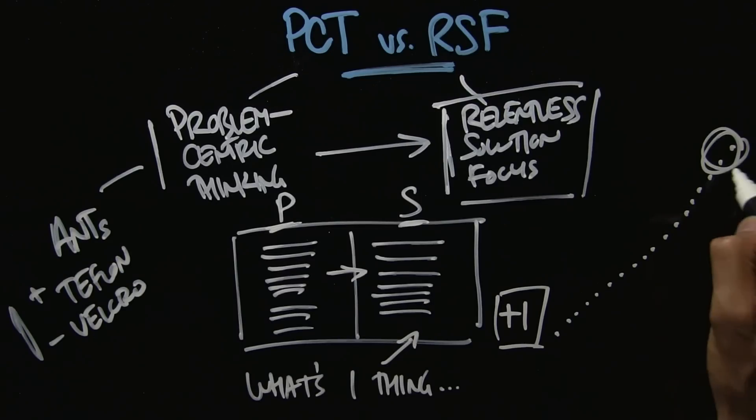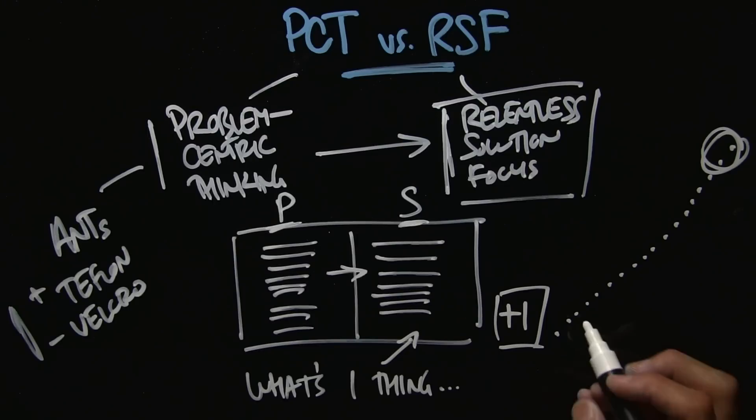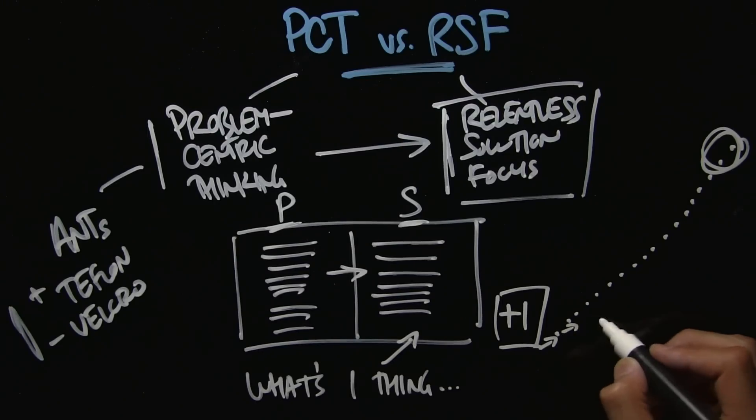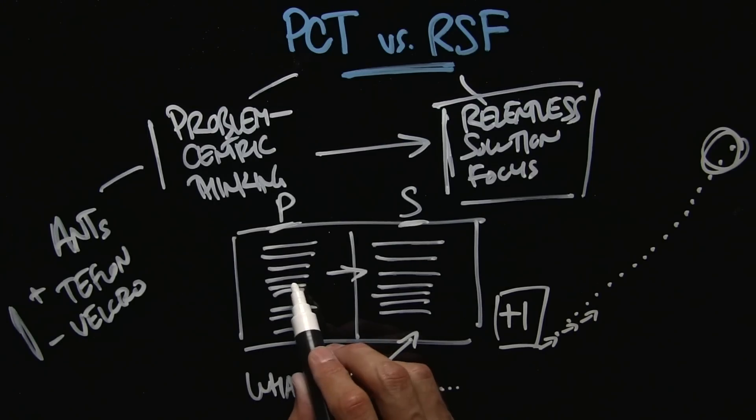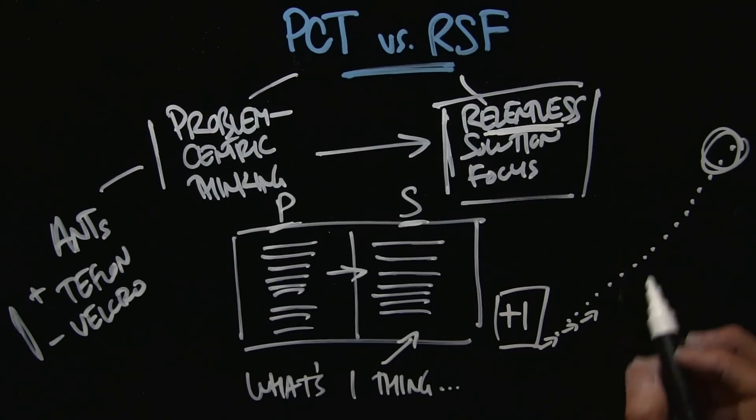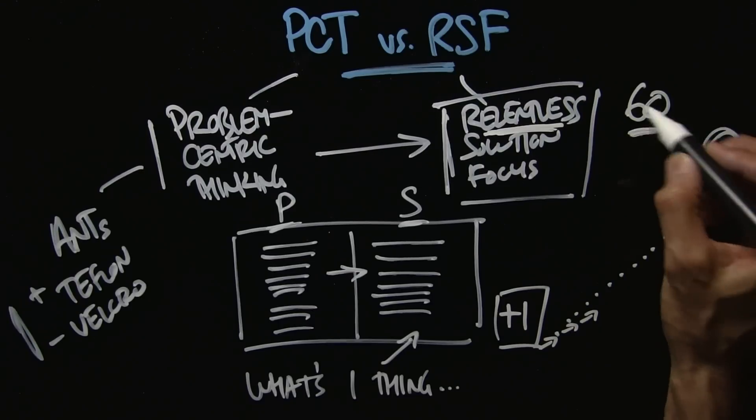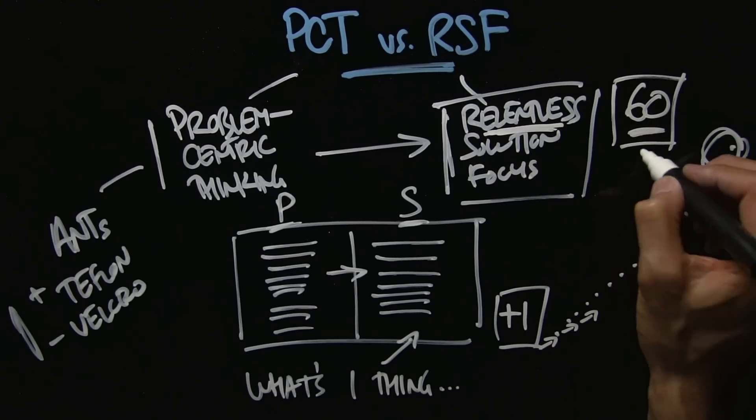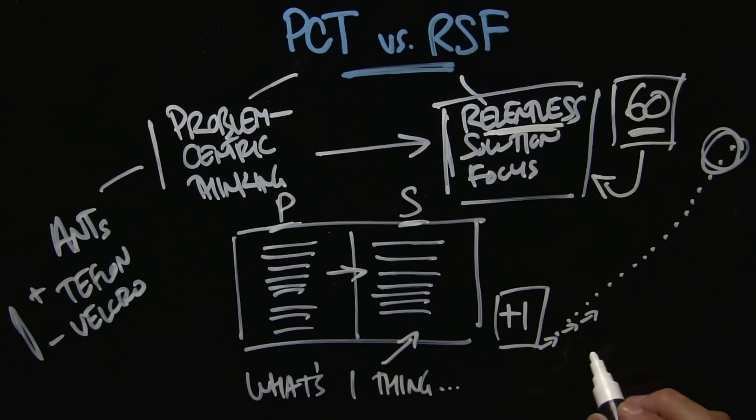But if you think you need to be here this moment, you're going to be in trouble. You don't. Just take the next step, and then the next step, then the next step. Problem to solution. Be relentless about it. He says, make it a game. Give yourself 60 seconds to be in problem mode and then get into relentless solution focus. RSF.